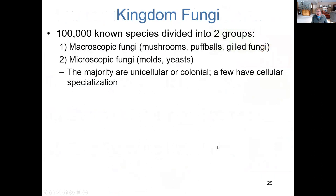Fungi — really an interesting group of eukaryotic cells. The kingdom is a taxonomic level within which we have 100,000-plus known species of fungi, ranging in size from those we can see when taking a walk in the woods — mushrooms, puffballs — to many that are microscopic and require a microscope to see.